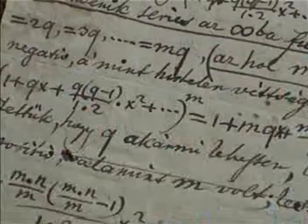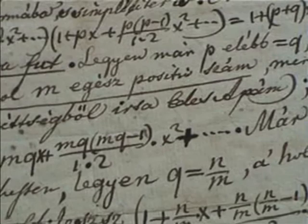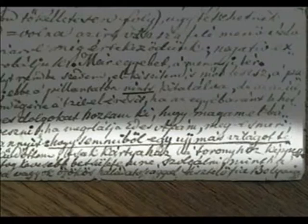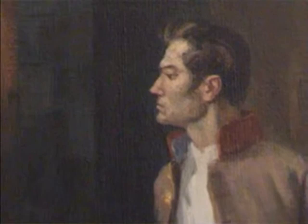És akkor a levélnek a végén mondja azt, hogy a feltételem már áll, tehát azt jelenti, hogy valamit ő akkor felfedezett. És mondja tovább, hogy ha időm lesz, és minden rendbe szedem a dolgaimat, akkor a paralellákról egy munkát adok ki. Nincs még meg, de majd meglátja édesapám, hogy az úton amelyiken elindultam, az a megoldáshoz vezet. És akkor jön az a sor, hogy a semmiből egy új más világot teremtettem, és mindaz, amit eddig küldtem, csak kártyaház aranyhoz képest.